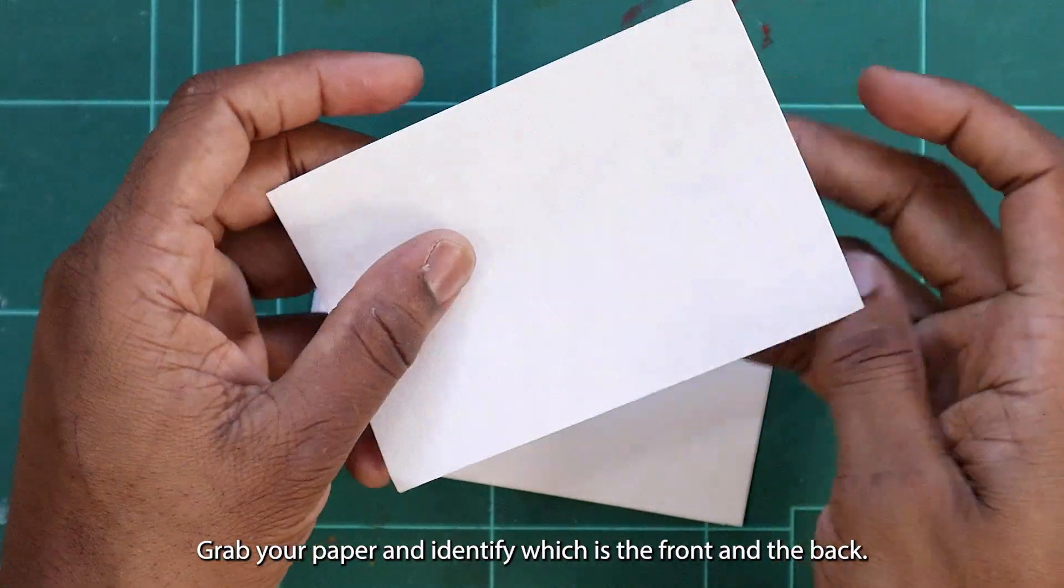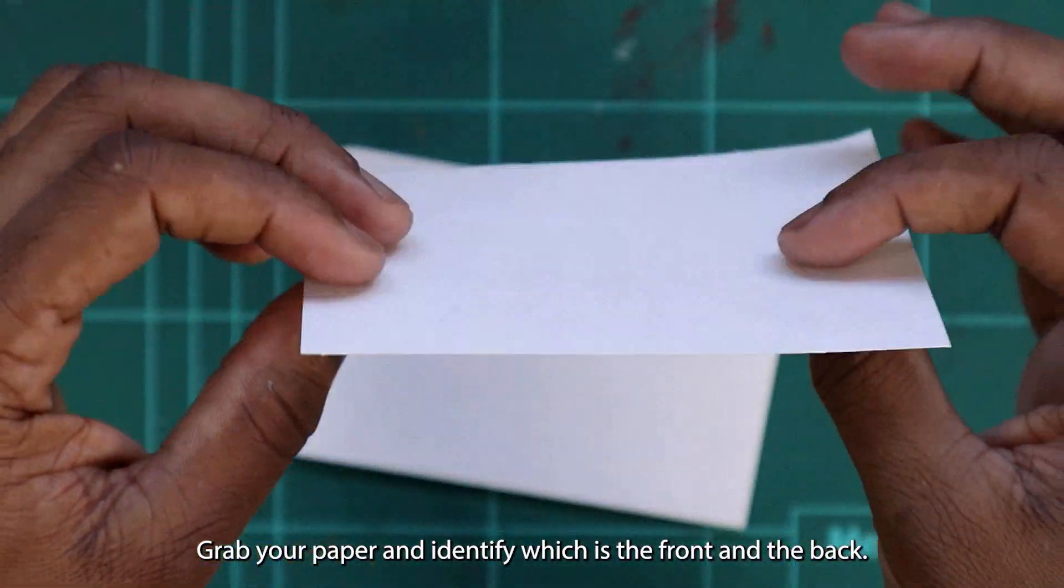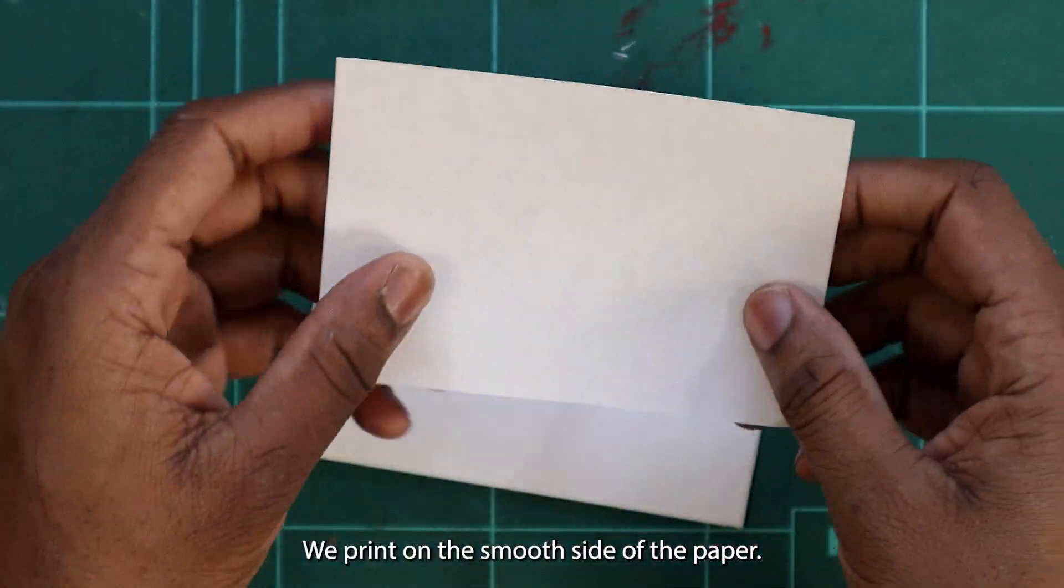Grab your paper and identify which is the front and which is the back. We print on the smooth side of the paper.